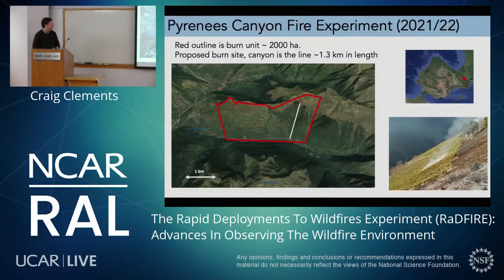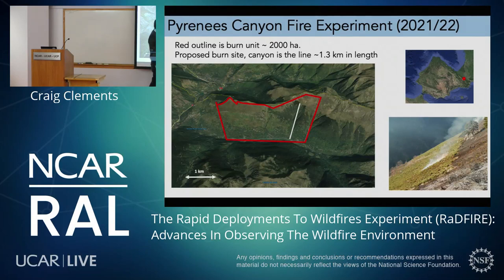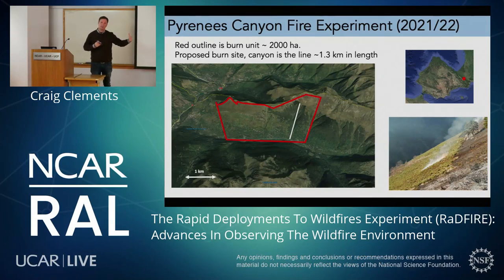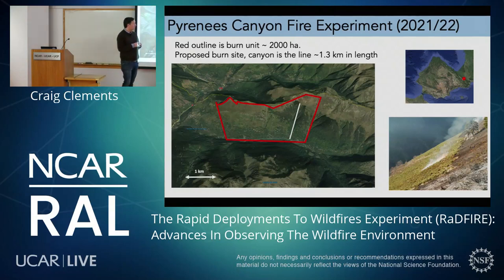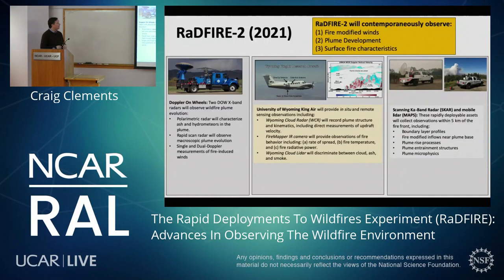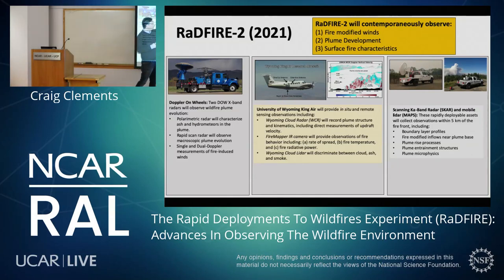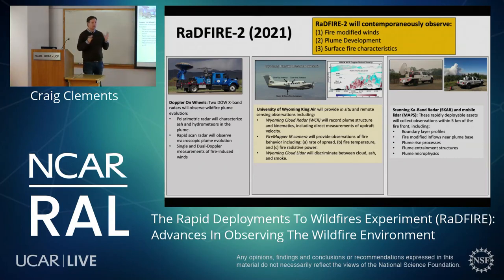We have a site in the Pyrenees — a 1.3-kilometer long canyon with complex fuels, on the France-Spain border. It's politically complicated because if it burns upslope, it's likely to spot over an international border. We're planning to do this either next winter or the following winter, with a lot of international agencies involved. The RadFire 2 campaign, proposed for 2021, would include two DOWs, the Wyoming King Air, two mobile LIDARs, and our Ka-band mobile — the largest field campaign ever to look at wildfire plume dynamics.